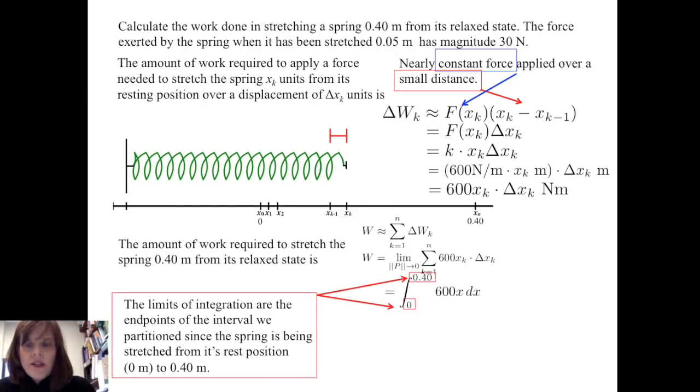This limit gives us the definite integral of 600x dx on the interval from zero to 0.4 because that's the interval that we partitioned. And finishing out the problem, we calculate that the amount of work done is 48 joules.